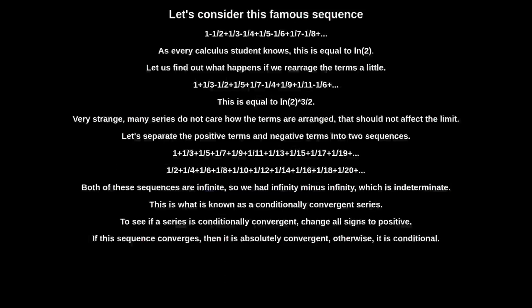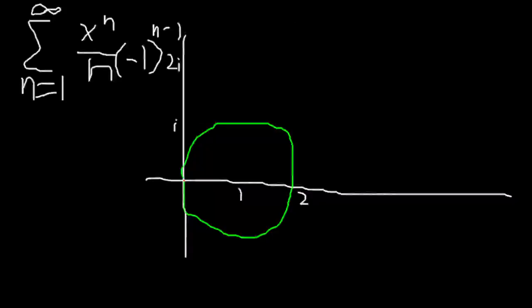There may be an easier test if you know where the series comes from, especially if it's a Taylor or Maclaurin series. There may be an easier way to know if it's conditionally convergent. If it's on the radius of convergence, like for the natural logarithm here, 2 is on the radius of convergence, so it is conditionally convergent.